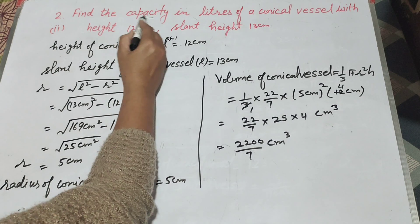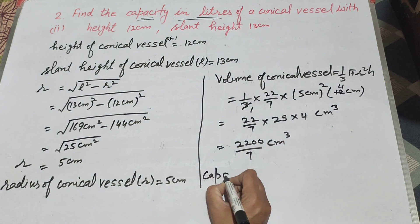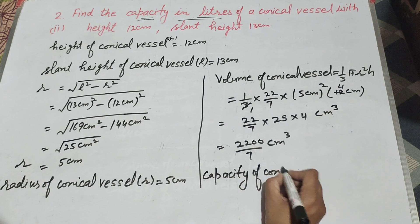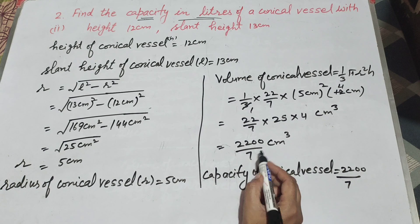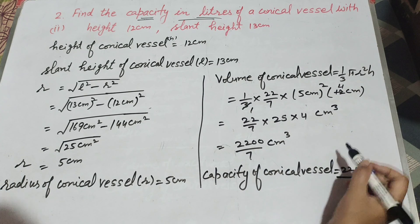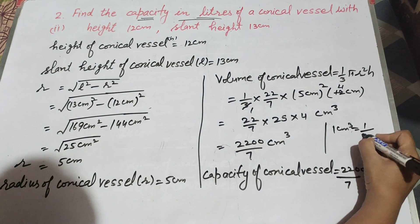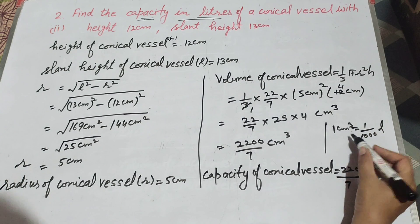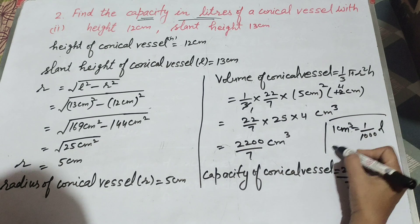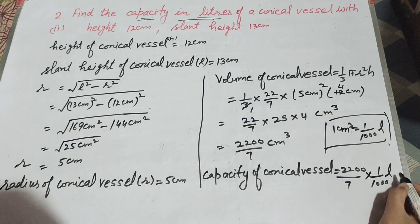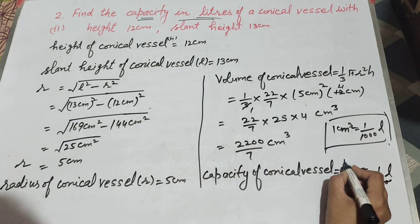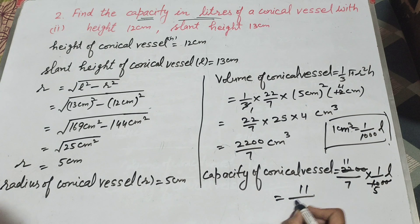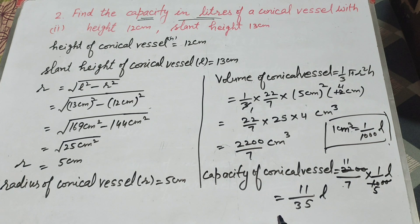In the question we find capacity in liters. Capacity of conical vessel equals 2200 over 7 centimeter cubed multiplied by 1 over 1000 liter. When we change centimeter cubed to liters we divide by 1000. Two zeros in denominator cancel, and 10 and 22 are divisible by 2, so they cancel to give 11 over 35 liter. Capacity of conical vessel is equal to 11 over 35 liter. Thanks for watching, like comment and share, subscribe to my YouTube channel.